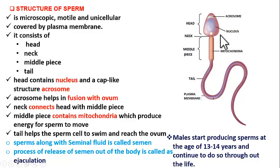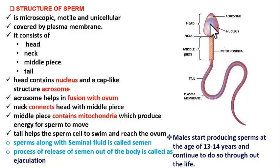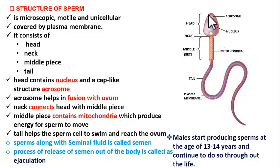This conical region is the head. This depression is the neck. The cylindrical region is the middle piece. And this whip-like curved region is called the tail. Now, what does the head contain? Head contains the nucleus and a cap-like structure over the nucleus called the acrosome. This cap-like structure contains several enzymes, and these enzymes help the sperm to fuse with the ovum. So acrosome helps in fusion with the ovum.